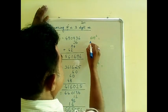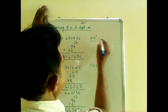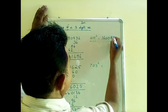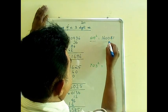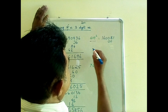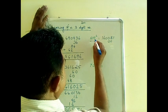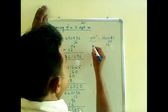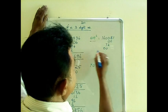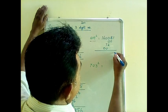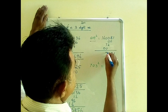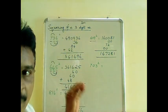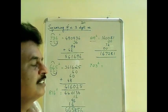Now take one more example: 409. 409 squared is nothing but 16, 0, 0, 81. And 2ab is 0, 2bc is 0, 2ac is nothing but 72, and 2ab is again 0. Adding 1, 8, 2, 7, 6, 1. Just by looking at the number you can immediately write the square of this three-digit number.